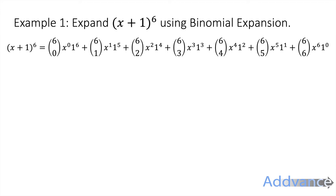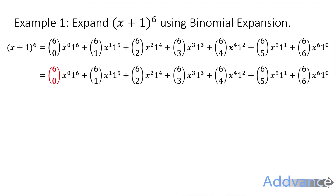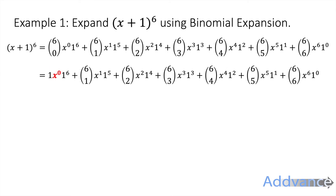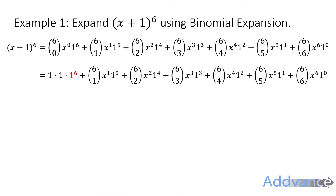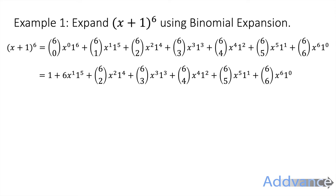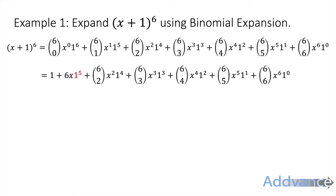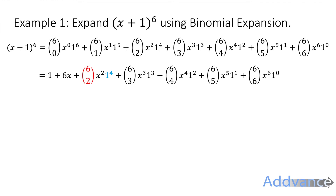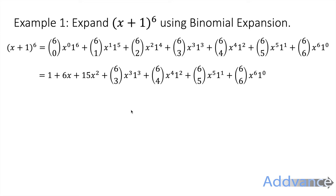Now we simplify. 6C0 = 1, x⁰ = 1, 1⁶ = 1, so the first term is just 1. 6C1 = 6, x¹ = x, 1⁵ = 1, giving 6x. 6C2 = 15 (use your calculator), and 1⁴ = 1, giving 15x². Remember to use your calculator for 6C2 as we did before.